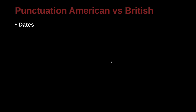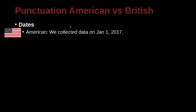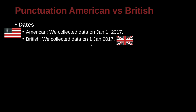Let's look at some other differences, and that would be in dates. Here we have the American common usage of the date, which is, for example, January 1, 2017 — no space before the comma, one space after the comma. In the British approach, we would reverse things a little bit: we collected data on 1 January 2017. No comma there at all, and we put the day first.